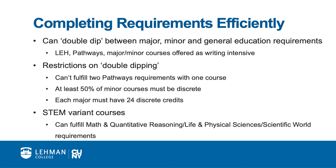Now that you're familiar with all of Lehman's academic requirements, let's discuss some ways in which you can complete them most efficiently. First, it's important to understand that courses can simultaneously apply to different requirements. This is commonly referred to as double-dipping. You can double-dip courses that apply to your major, minor, and general education requirements. Many LEH and Pathways courses are offered as writing-intensive courses. In addition, some majors and minors have requirements that are also offered as writing-intensive. There are some restrictions on double-dipping.